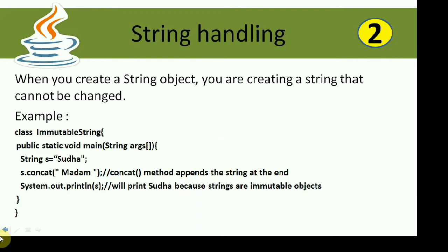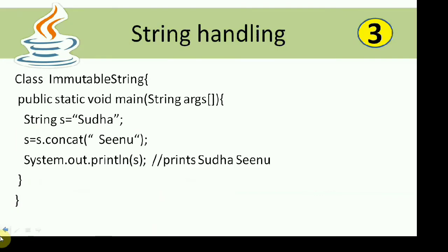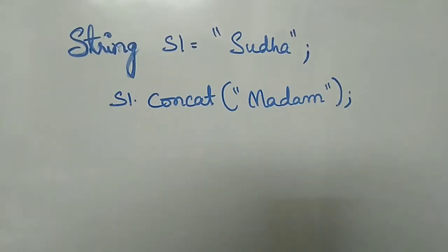That's why strings are immutable. In this case, what I did is I explicitly assigned S to the concatenated string of 'Sudha' and 'Sudha' together. So when I try to print S, I will be getting 'Sudha Sudha'.